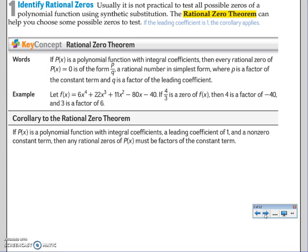The first thing it says is it's usually not practical to test all possible zeros of a polynomial function using synthetic division. It takes way too long. So that's why we have the RZT, the Rational Zero Theorem, to help us narrow down the choices just a little bit.